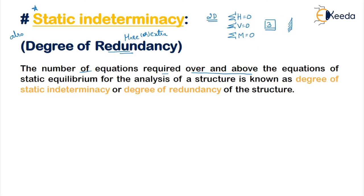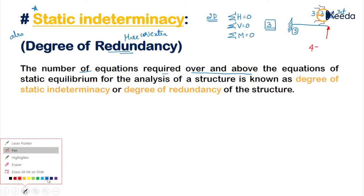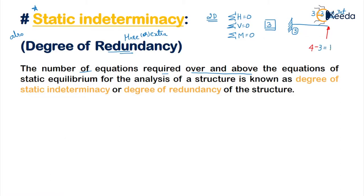Consider a simply supported beam — it has three reactions and three equations of equilibrium, so the subtraction is zero and it becomes a determinate structure. If you change this to a propped cantilever beam, there are four reactions but only three equations of equilibrium, so the difference becomes 1. This becomes an indeterminate structure with degree of indeterminacy equal to 1. One extra equation is required to analyze the propped cantilever — that value of 1 is the degree of static indeterminacy or degree of redundancy.